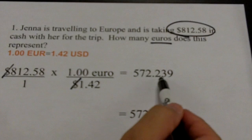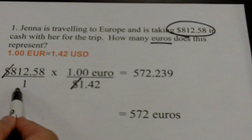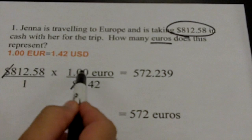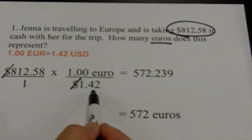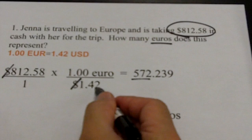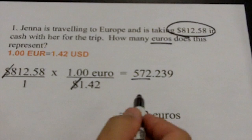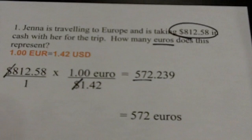Now let's talk about significant digits. I have five significant digits in 812.58. The exchange rate 1.42 is an exact number — exact numbers do not limit significant digits. The value 1.00 is also exact and could have been written 1.000 continuing forever, so it won't limit significant digits either. In 1.42 I have three significant digits. Taking the lower of five and three gives three. So from 572.239, I underline the first three numbers. The next digit is not five or greater, so I leave it at 572 euros. 572 euros is the equivalent of $812.58.